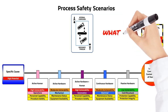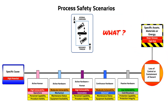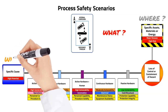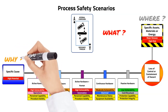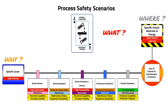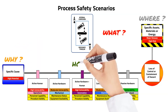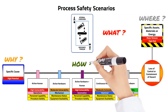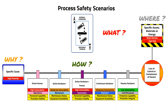In summary, the cards highlight what can go wrong. The bow tie hazards and top events identify where it might happen. The threats indicate why it occurs. The barriers highlight how loss of containment is prevented and who is responsible.